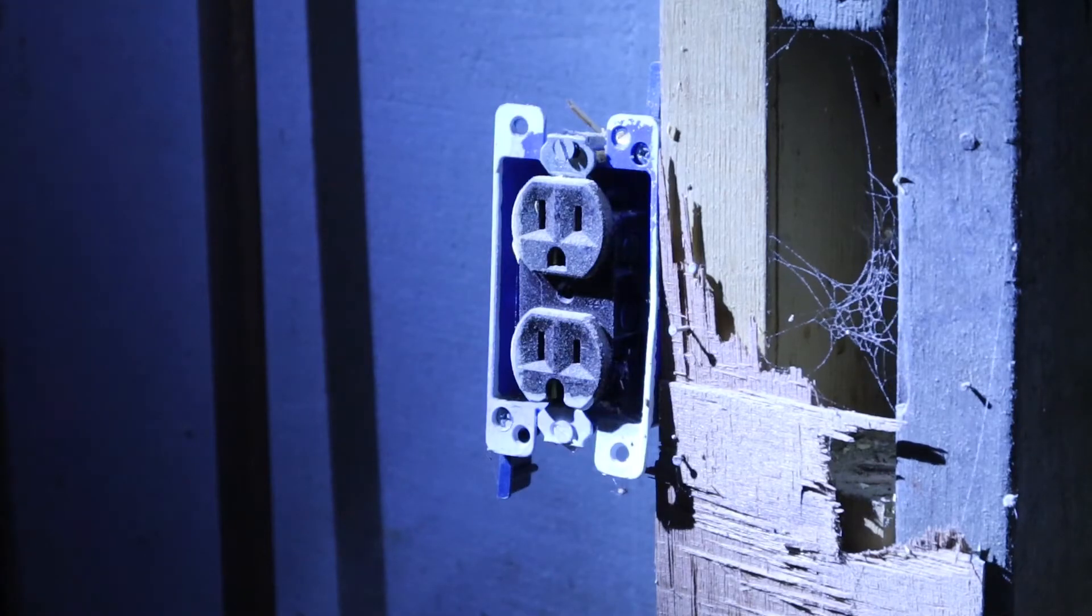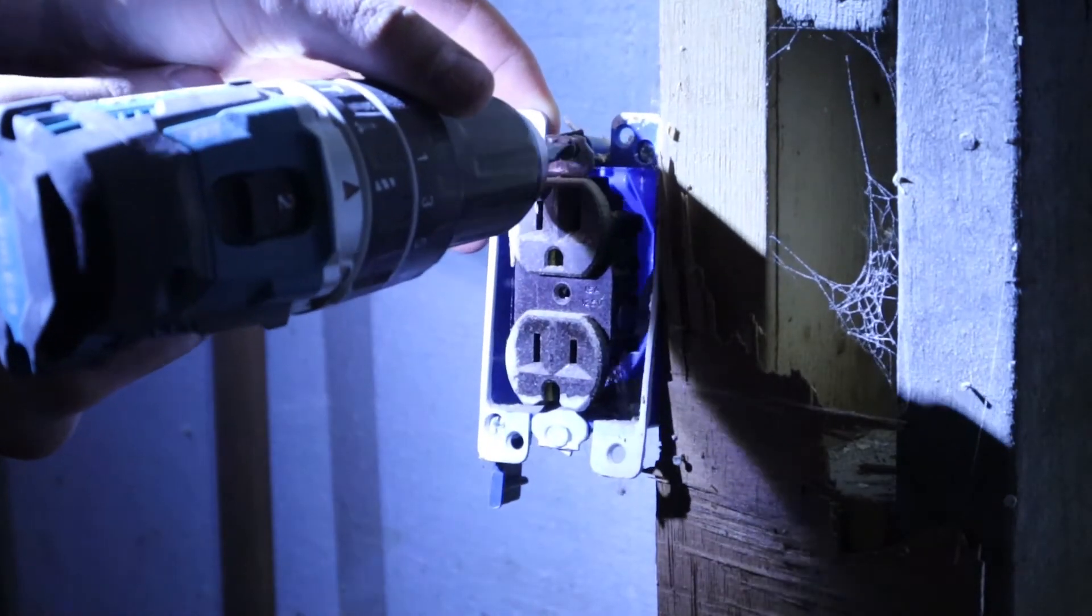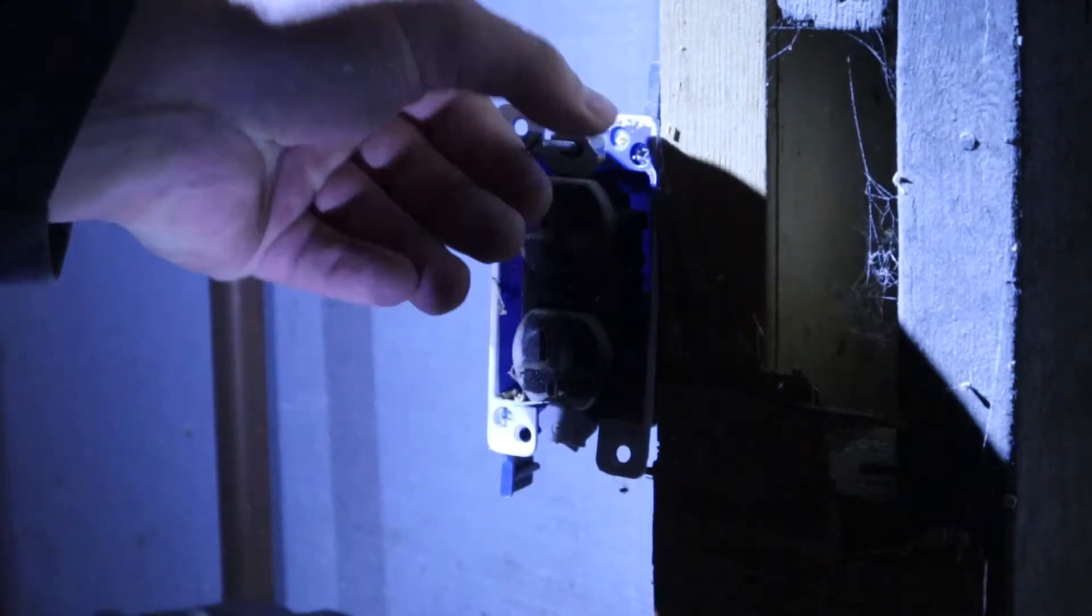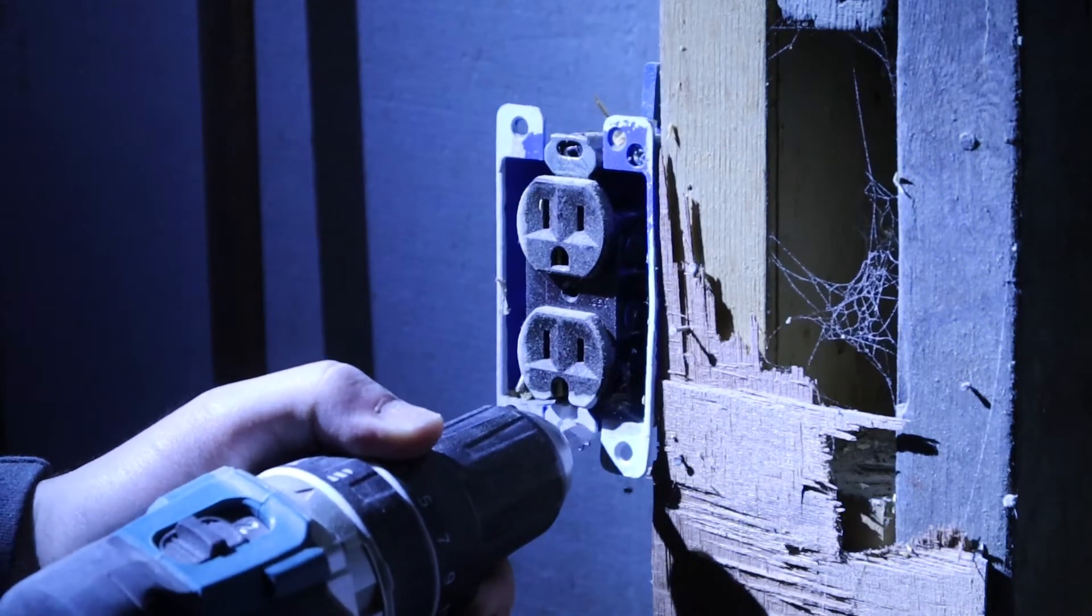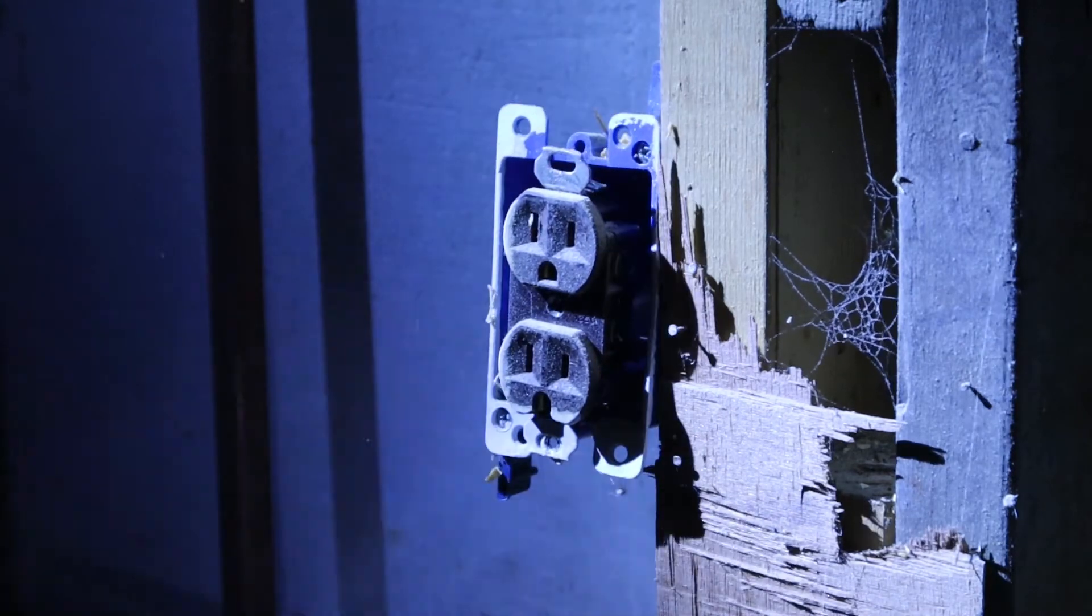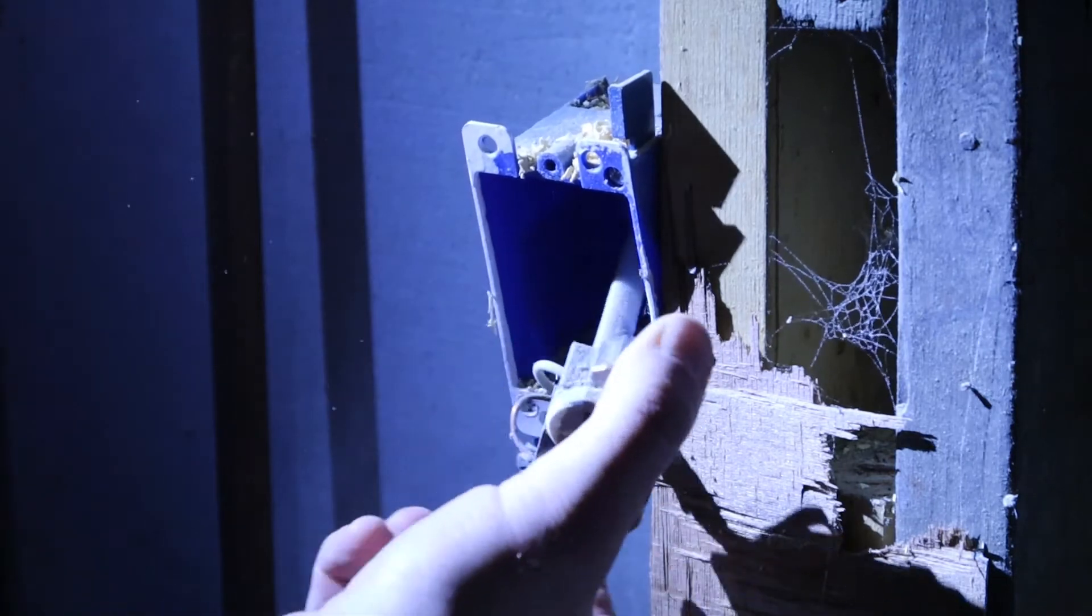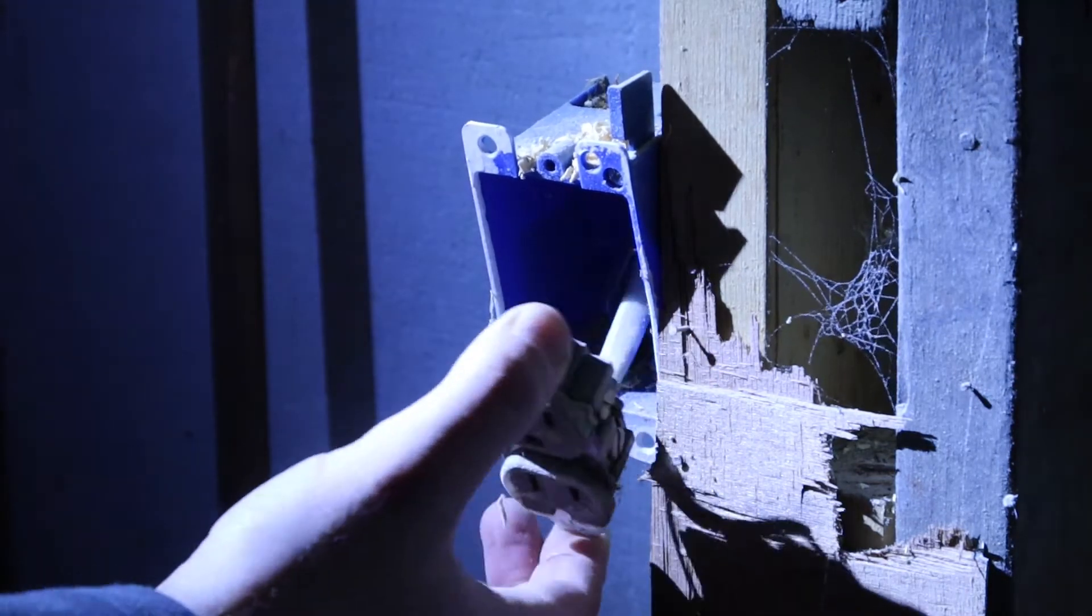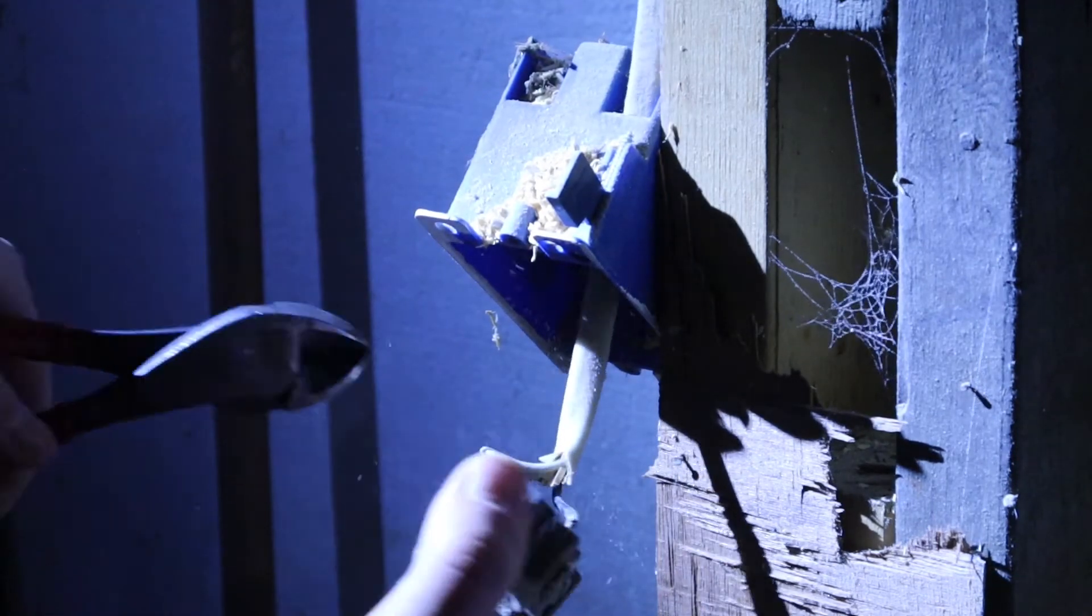So with the breaker off, the first thing that we're going to do is unattach the outlet from the box itself and then I noticed that this is one of the outlets where the wires plug into the back versus screw into the sides and so I just cut these.